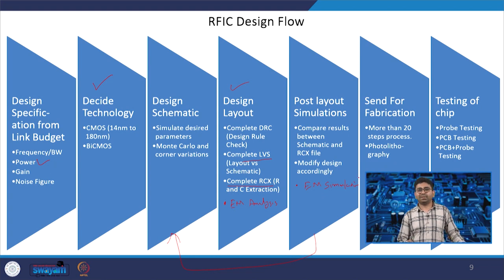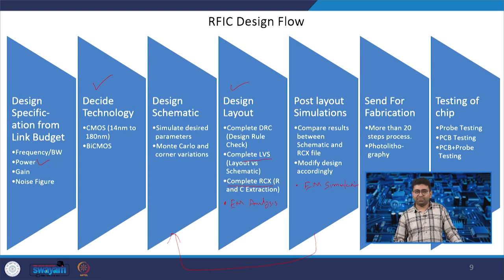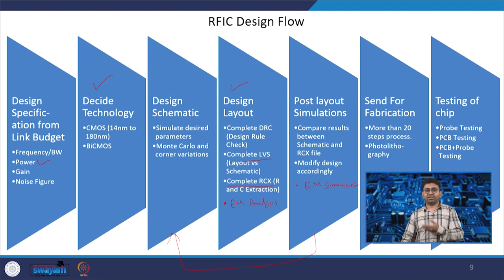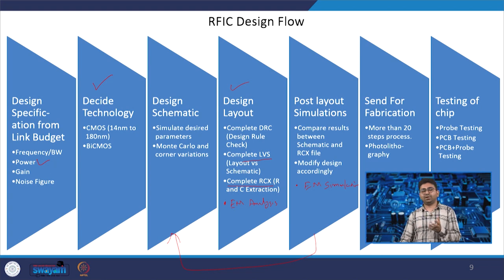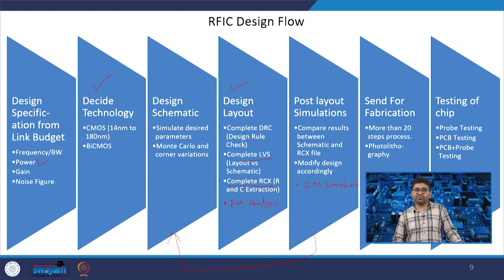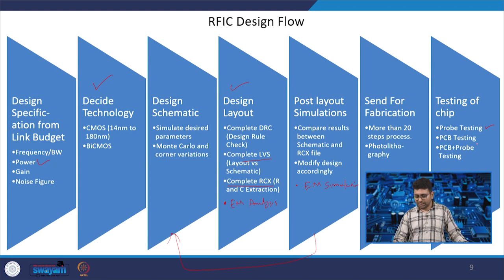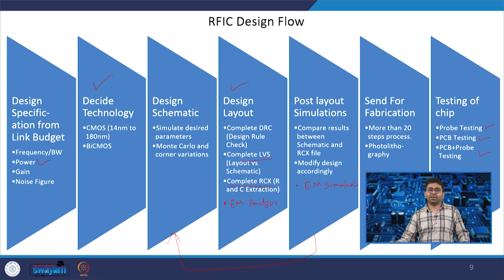Once you have finalized the layout, you send the design for fabrication. There are more than twenty to thirty fabrication steps that the foundry will do — including photolithography and various techniques. If you want to study more about fabrication, you need to do a course on VLSI technologies. Once the chip comes out, you need to do testing. In probe testing, we reduce the loss of interconnects or PCB losses by directly probing — there are different kinds of probes available.